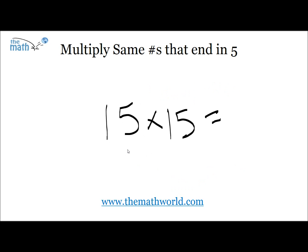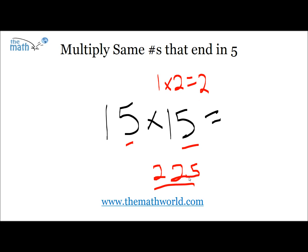We'll go over two more examples just to make sure you understand the trick. So, 15 times 15 — a pretty basic one. Again, write down 25. Then 1, which is our 10th digit, times the next largest number, which is 2, equals 2. So 15 times 15 is 225.